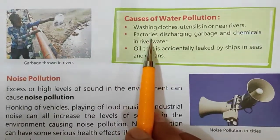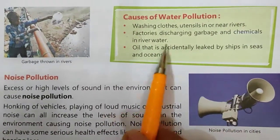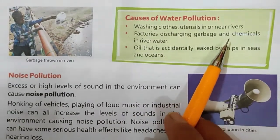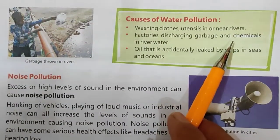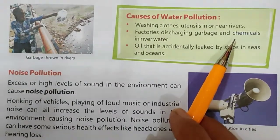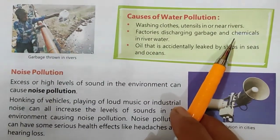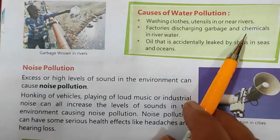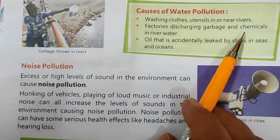Second is factories discharging garbage and chemicals in river water. The garbage and chemicals thrown from factories into the river will make the river water unfit for drinking, either for animals or human beings, and it cannot be used for agriculture purposes either.